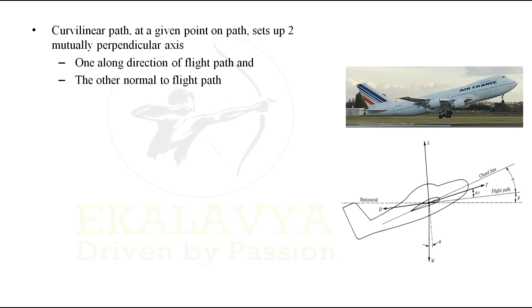If we consider a curvilinear path as discussed in video lecture 2, this curvilinear path at a given point sets up two mutually perpendicular axes — one along the direction of the flight path and the other normal to the flight path. In simple words, at a point on a curvilinear path we can resolve the forces parallel to the flight path and perpendicular to the flight path.